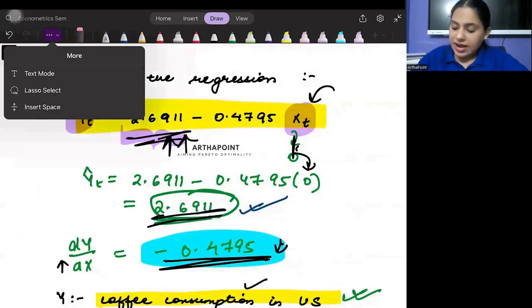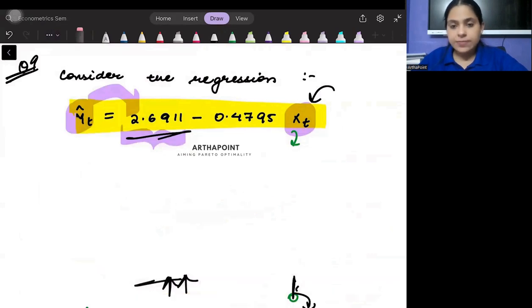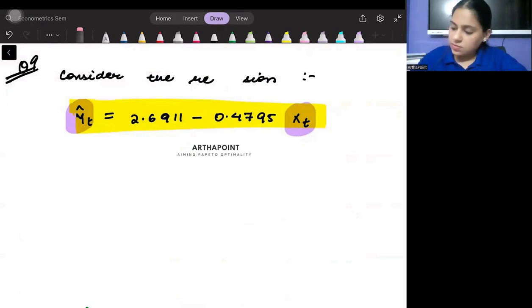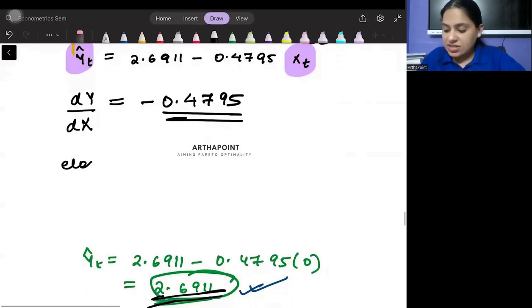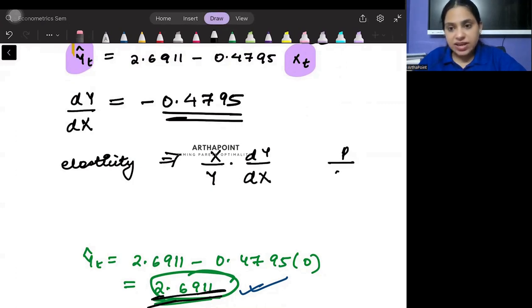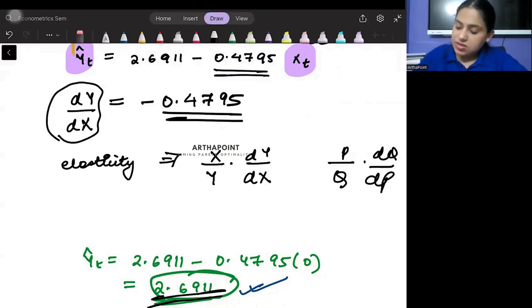From this equation that is given to us, which says consumption is a function of price, from this equation I can tell how my quantity will change when price changes. X is the price, Y is the quantity, so I can find this out and get minus 0.4795. But for price elasticity, what do I need? I need P/Q times dQ/dP. This is only telling me dQ/dP.